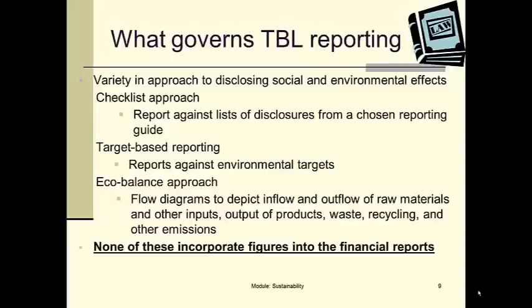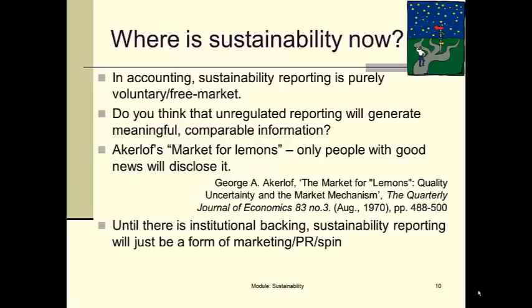These are different ways of reporting social and environmental aspects. But remember, none of these link in with our financial reports. Unless there is a distinct, clear cost or benefit, the financial reports are not going to be showing up triple bottom line — they are not going to be showing the social and environmental parts. So where is sustainability now? Realistically, with a lack of regulation, sustainability reporting is voluntary — it is free market. Do you think that unregulated reporting will generate meaningful, comparable information? If you're interested in that question, have a look at George Akerlof's article from way back in 1970 on the market for lemons.